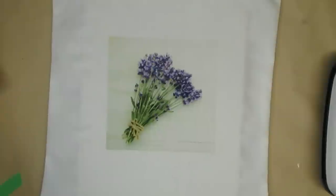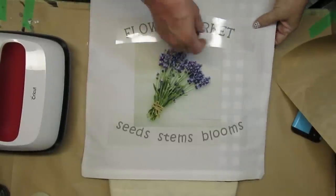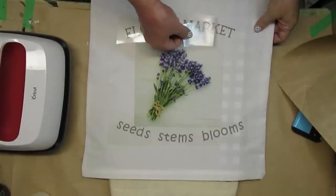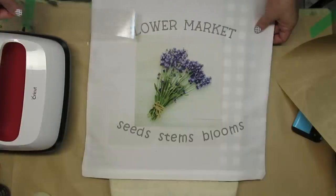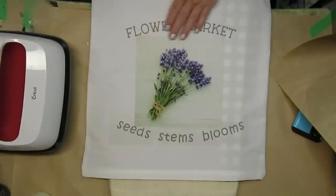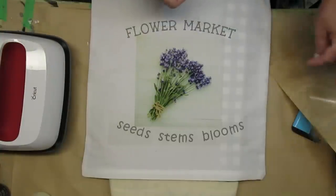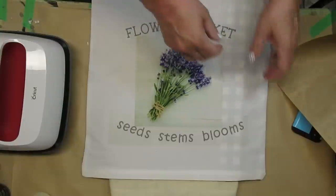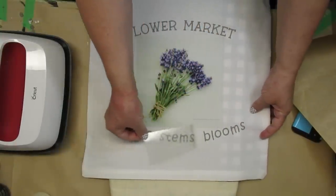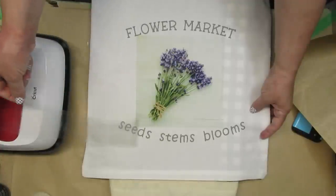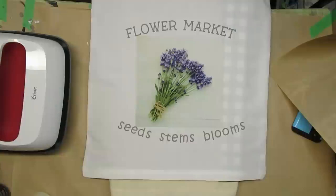I also then added the heat transfer vinyl from Tech Wrap Craft. I got some in gray and I just thought that would be so pretty to not have such a stark black color, although black is always really nice. So I went ahead and cut it out, weeded it, and then followed the instructions and I have a beautiful pillow to showcase for summer.